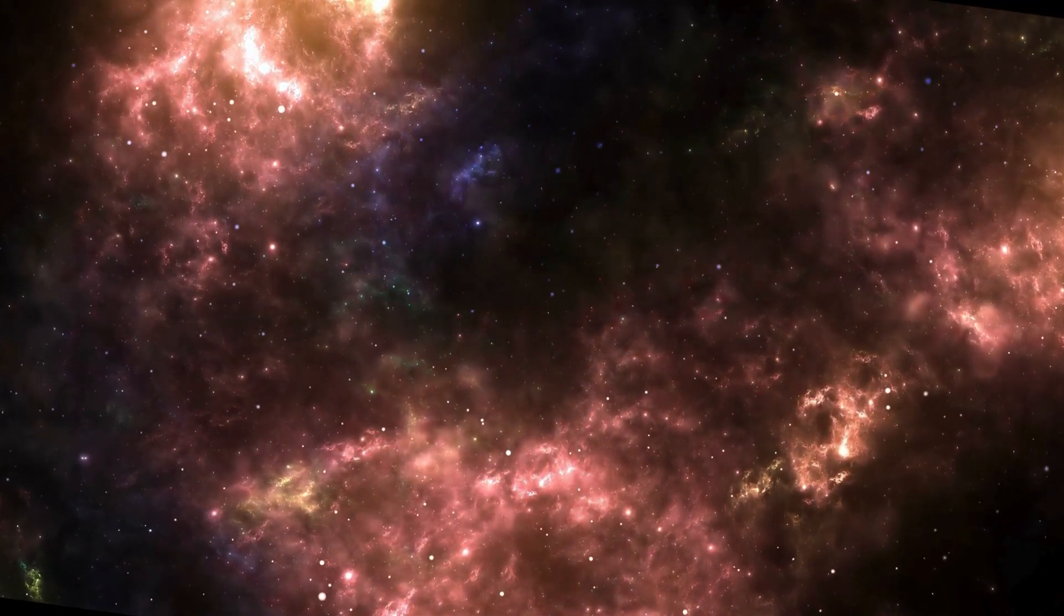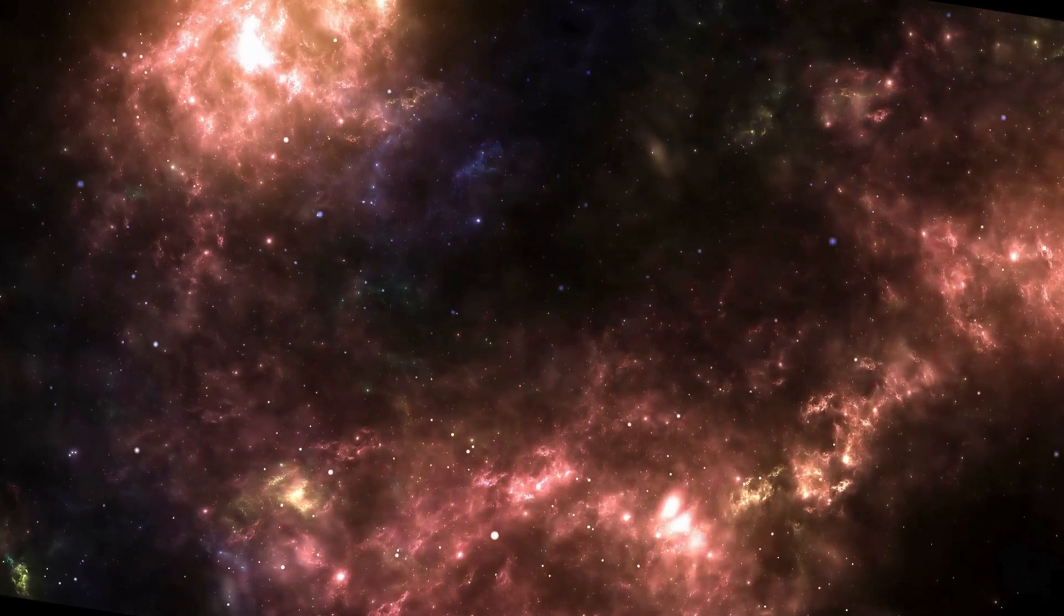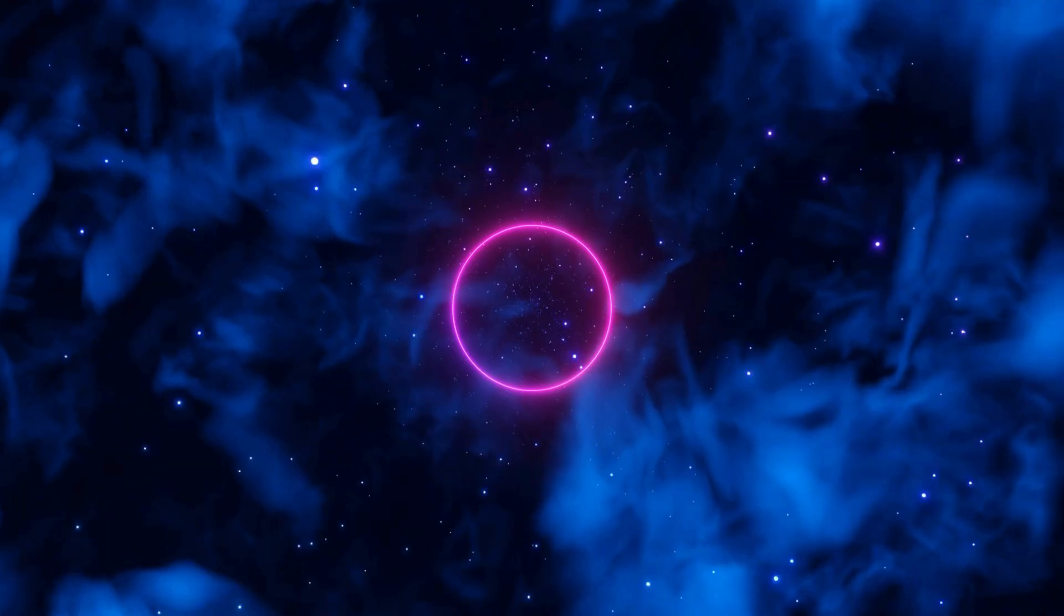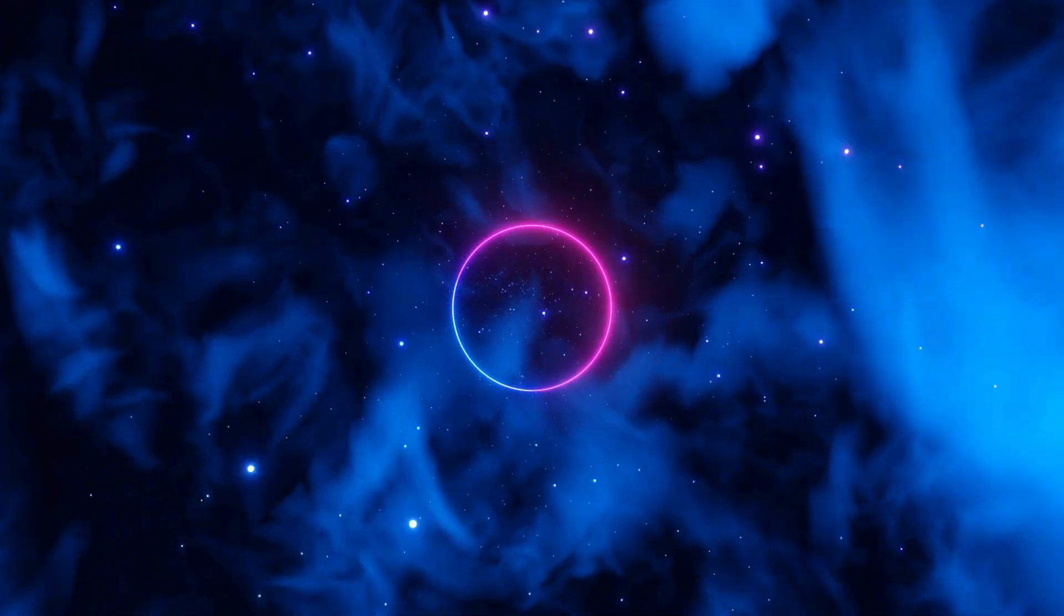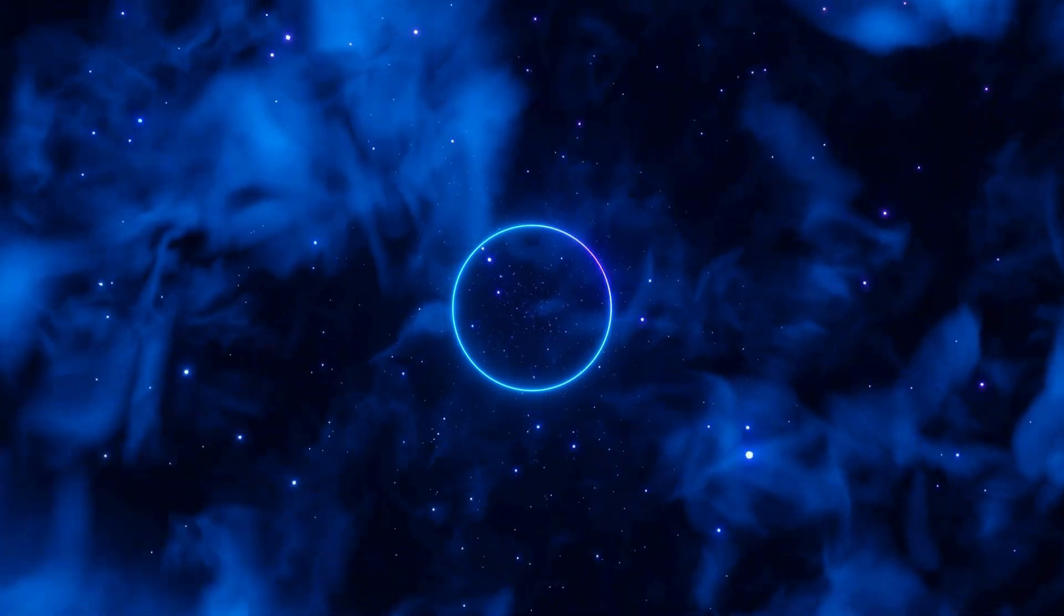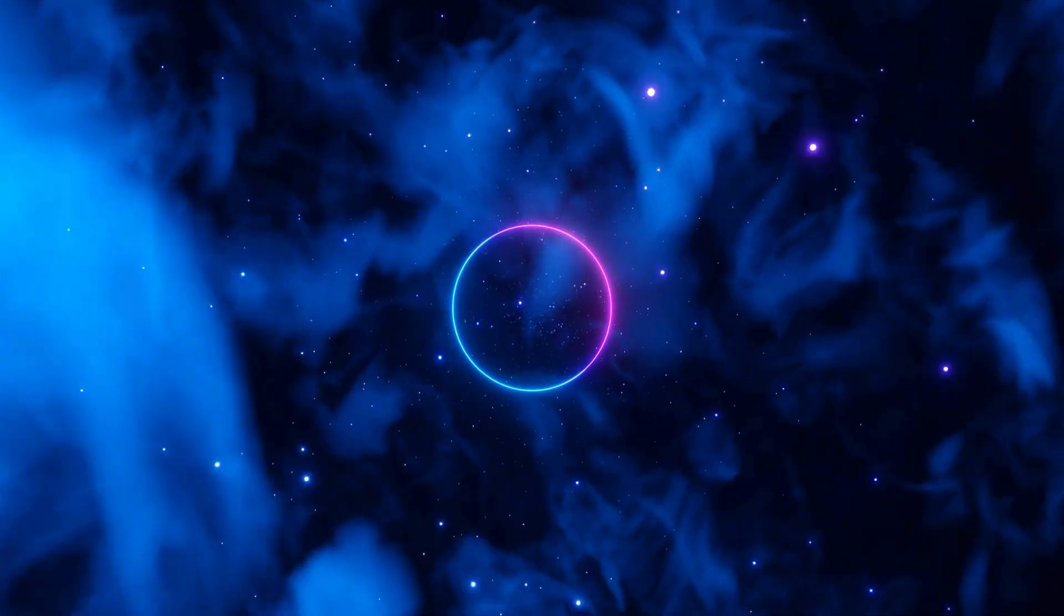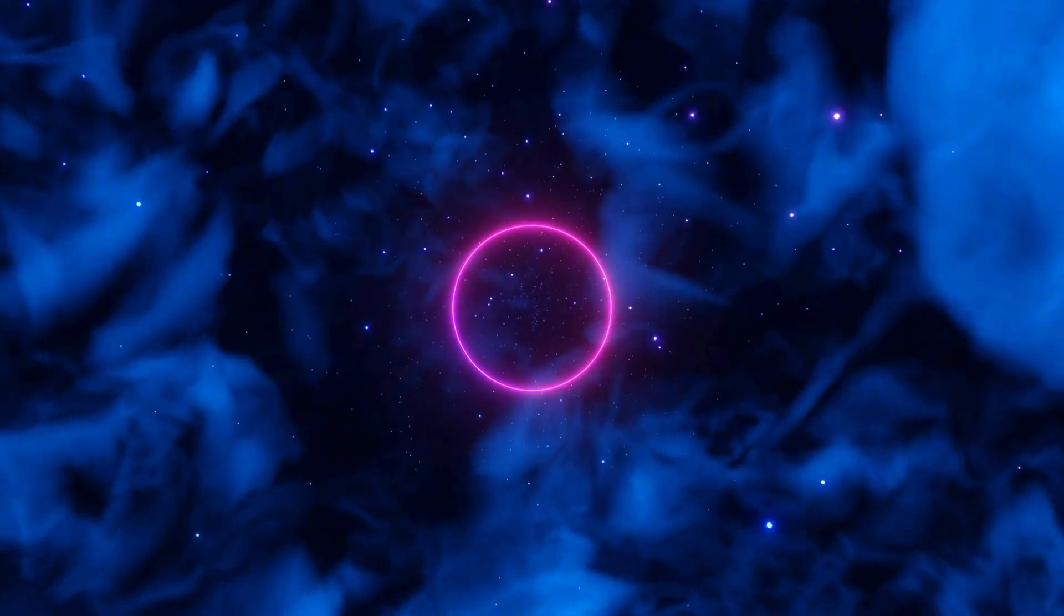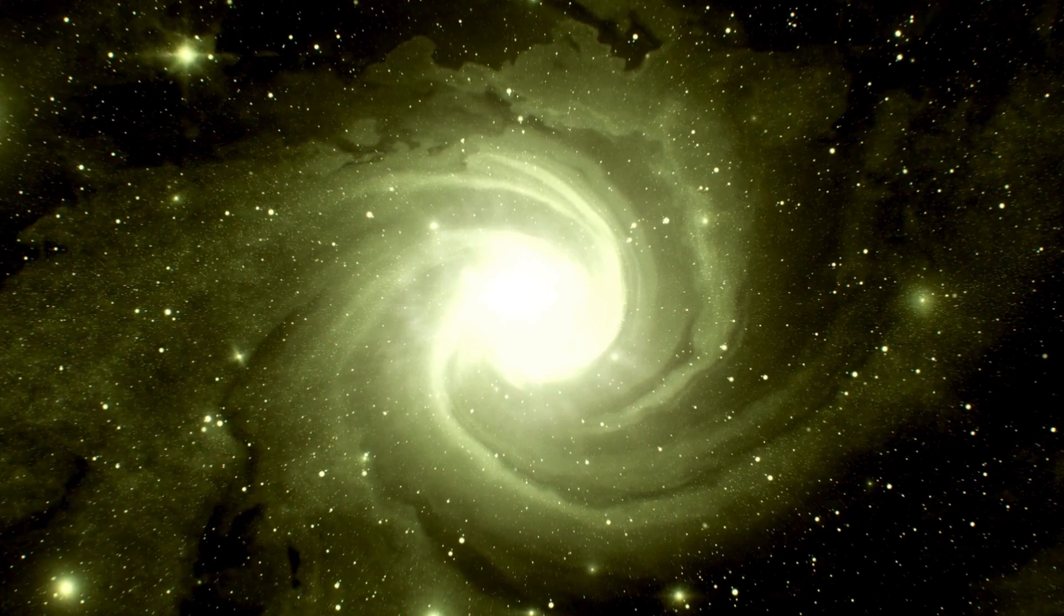Webb's discoveries don't stop with distant galaxies. It has also revealed strange and unexpected phenomena much closer to home. Take, for instance, a recent observation of a star known as Galabu R 140. The telescope captured a stunning image of this star surrounded by a series of concentric rings, like ripples in a pond.